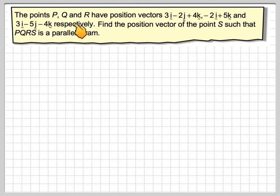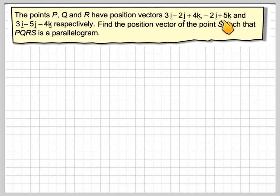The points P, Q and R have position vectors 3i minus 2j plus 4k, minus 2i plus 5k, and 3i minus 5j minus 4k respectively. Find the position vector of the point S such that P, Q, R, S is a parallelogram.